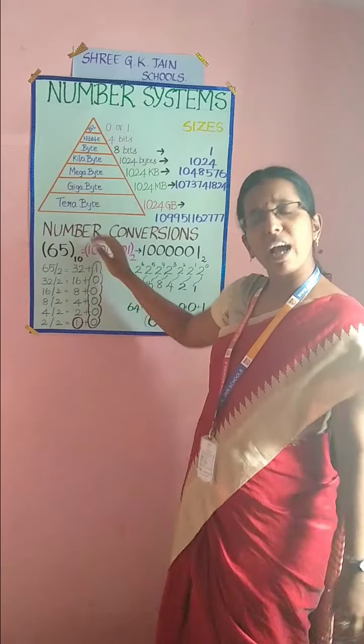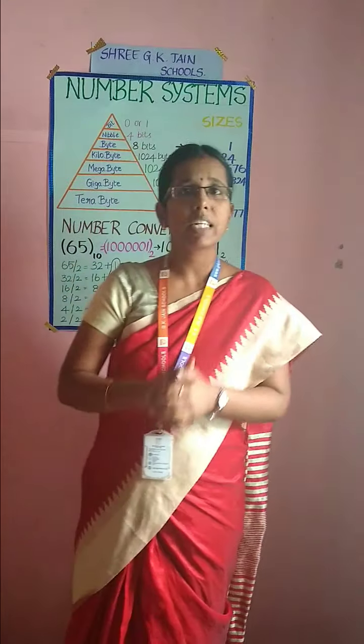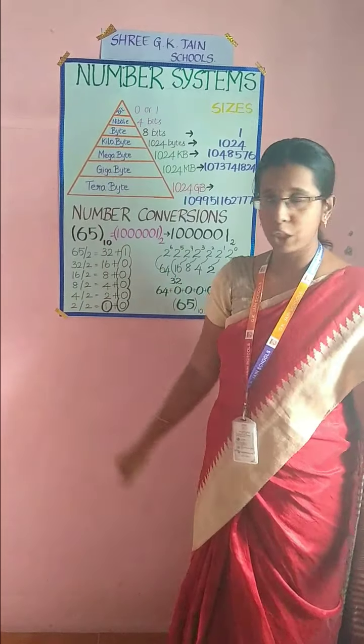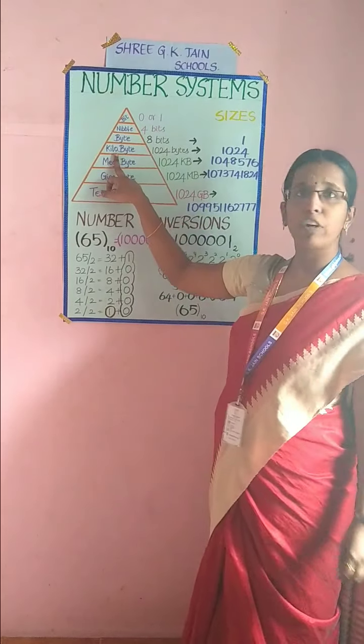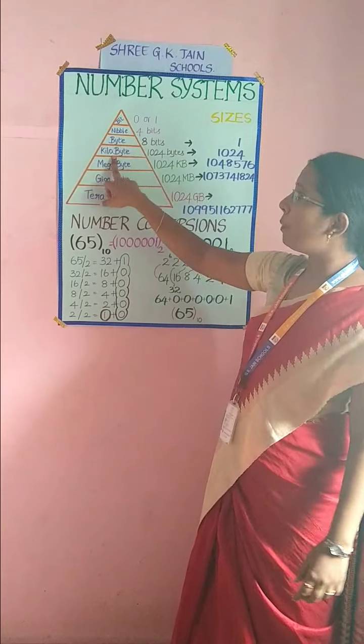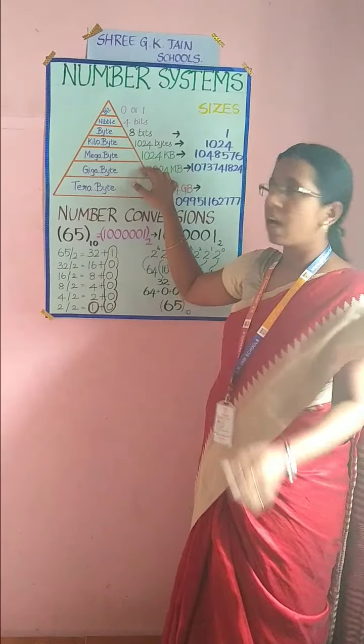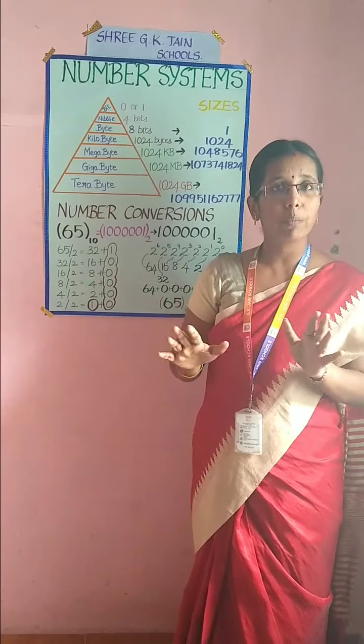4 bits combined together — for example, four 0s or four 1s, or any combination — that will be your nibble. And 8 bits combined together will form a byte. And you have kilobyte, megabyte, gigabyte, terabyte, petabyte, exa, zeta, and yota. All of these come under your data representations.